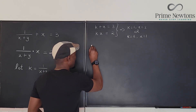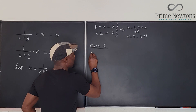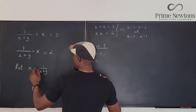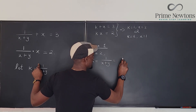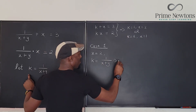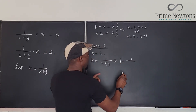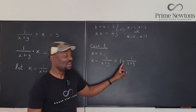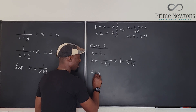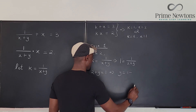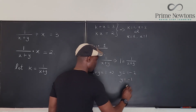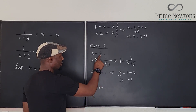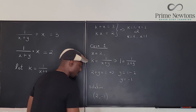Let's start with Case 1: x equals two. When x equals two, k equals one over x plus y equals one, which implies one equals one over two plus y. So if one equals one over two plus y, it means two plus y equals one, which gives y equals negative one. So one solution is x equals two, y equals negative one.